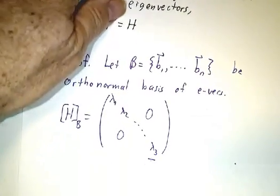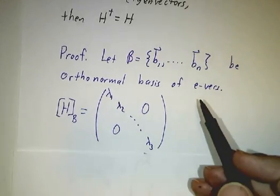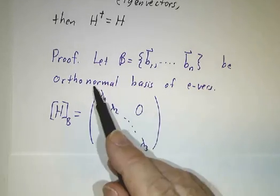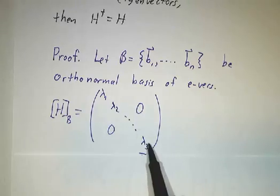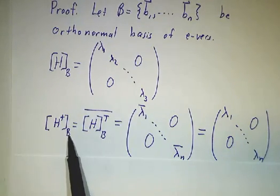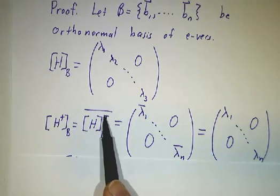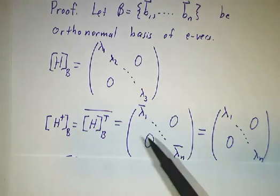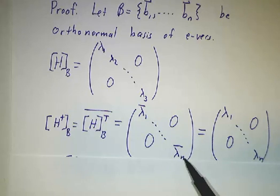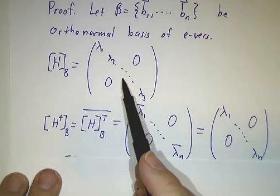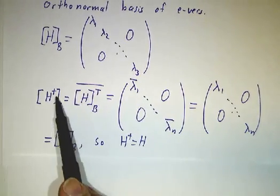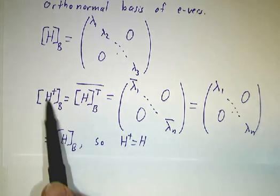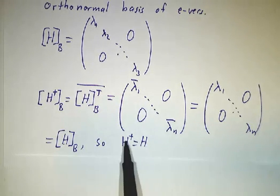Here's the proof. Suppose it's diagonalizable, has real eigenvalues, and an orthogonal basis of eigenvectors. By scaling, we can make it an orthonormal basis of eigenvectors. Since they're eigenvectors, the matrix of H in the d basis is diagonal. To find the matrix of H†: since we're working in an orthonormal basis, it's the matrix of H transpose conjugate. Taking the transpose of a diagonal matrix does nothing, and conjugating real numbers does nothing. So the transpose conjugate of this matrix is just this matrix again — the matrix of H† equals the matrix of H. Since two operators with the same matrix are the same operator, H† equals H.